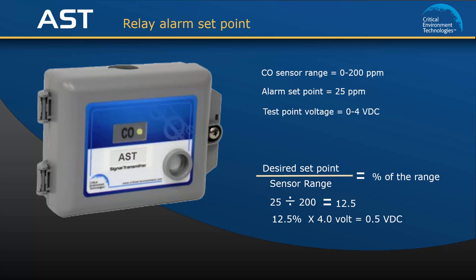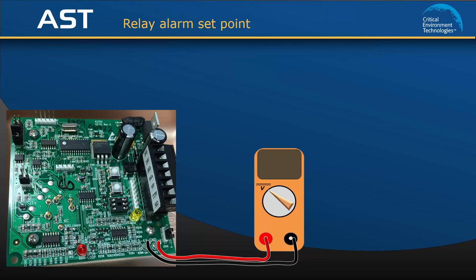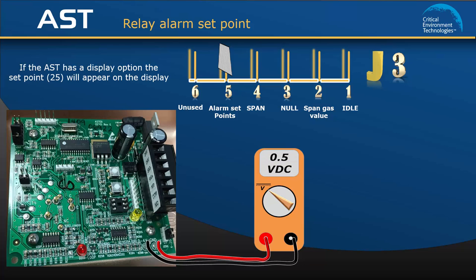To set this alarm set point, attach the voltmeter leads to test points TP1 and TP2. Move the jumper from idle to position 5, alarm set point. The LED will flash green to confirm it is ready for you to set the value. Use the up and down push buttons to adjust the number to the calculated voltage reading on the multimeter, which is 0.5 volts in this exercise. If the AST has the optional display, the display will show 25 ppm. Move the jumper back to the idle position and the alarm set point value will be saved. The LED will flash green once for confirmation.